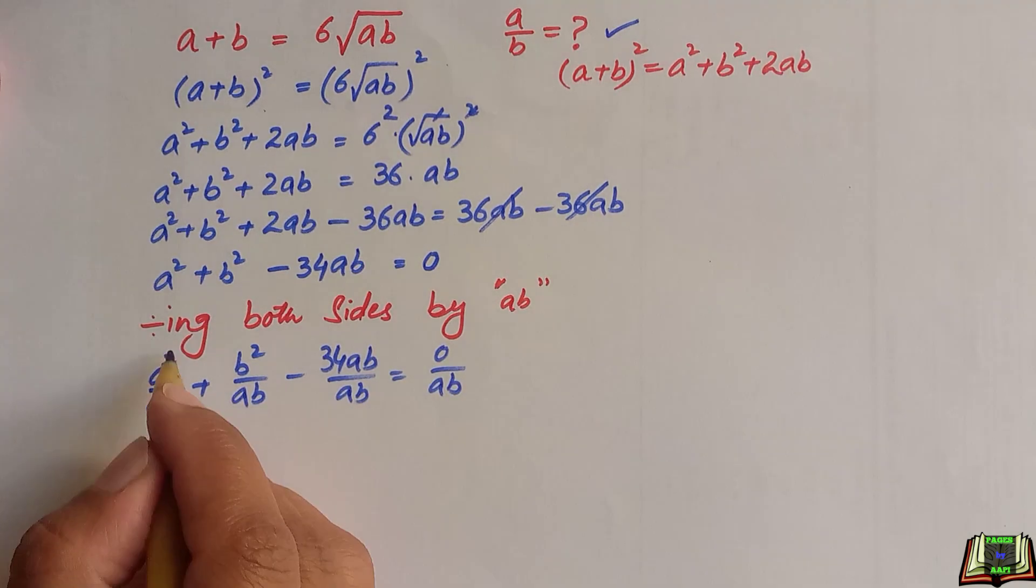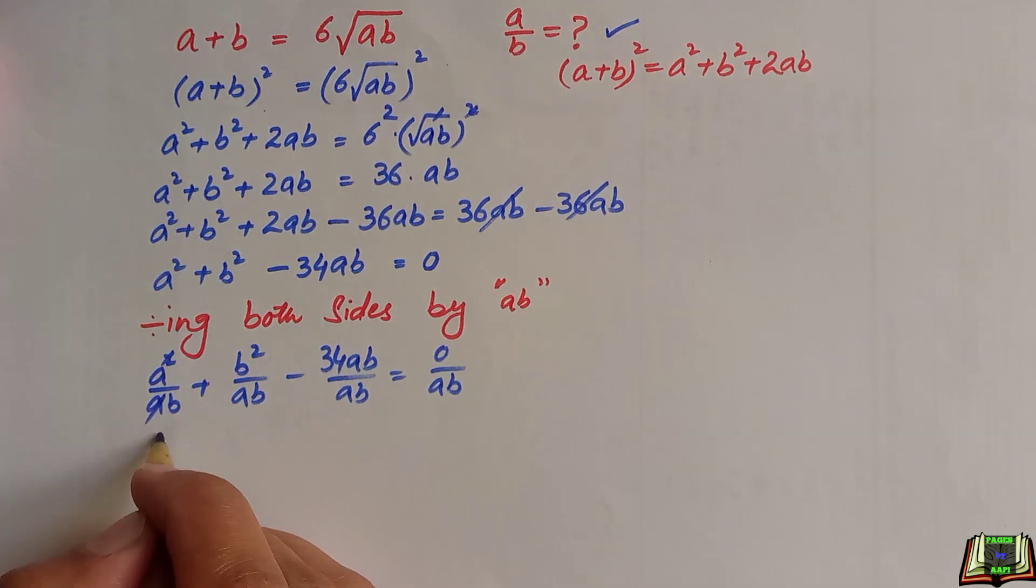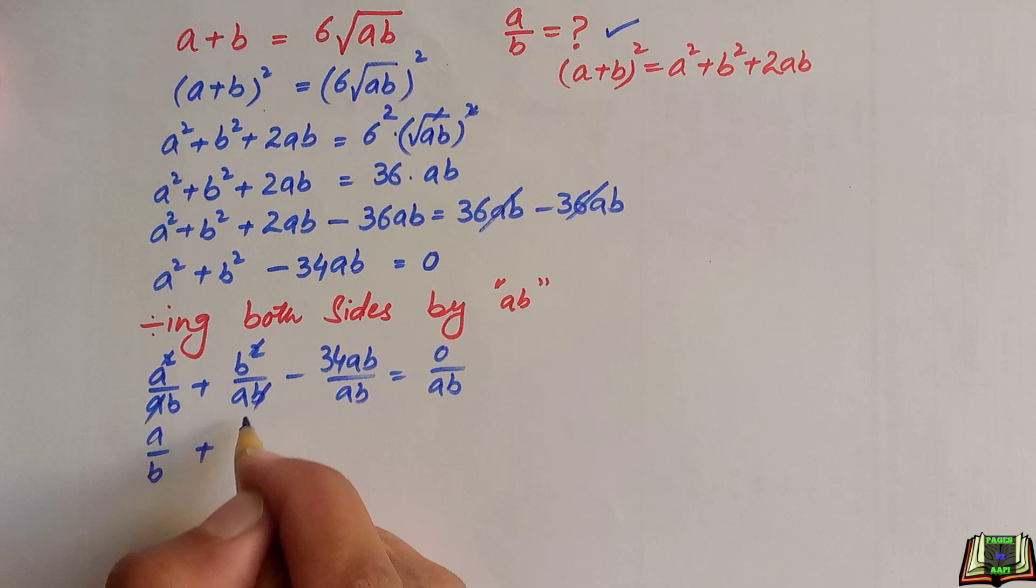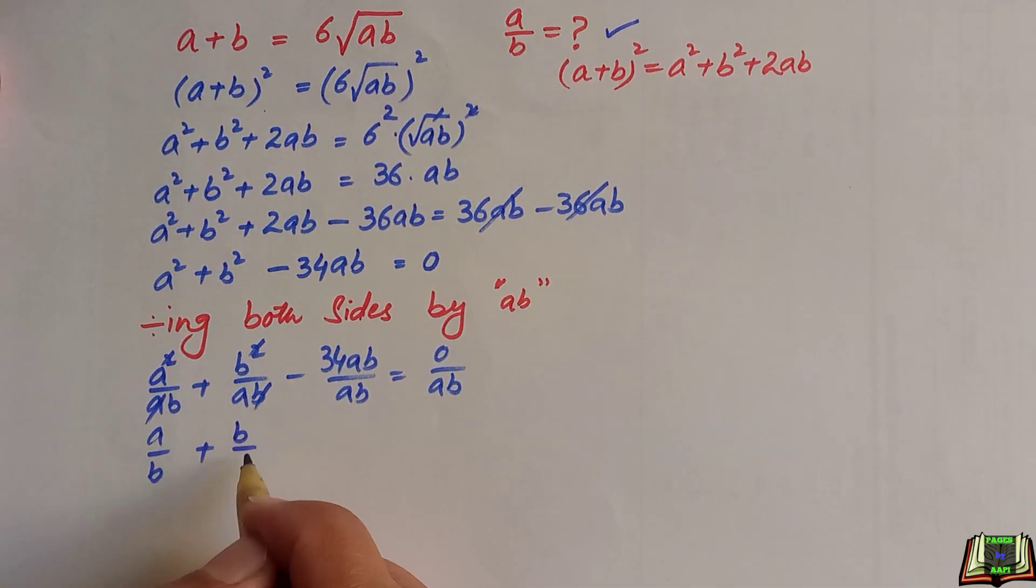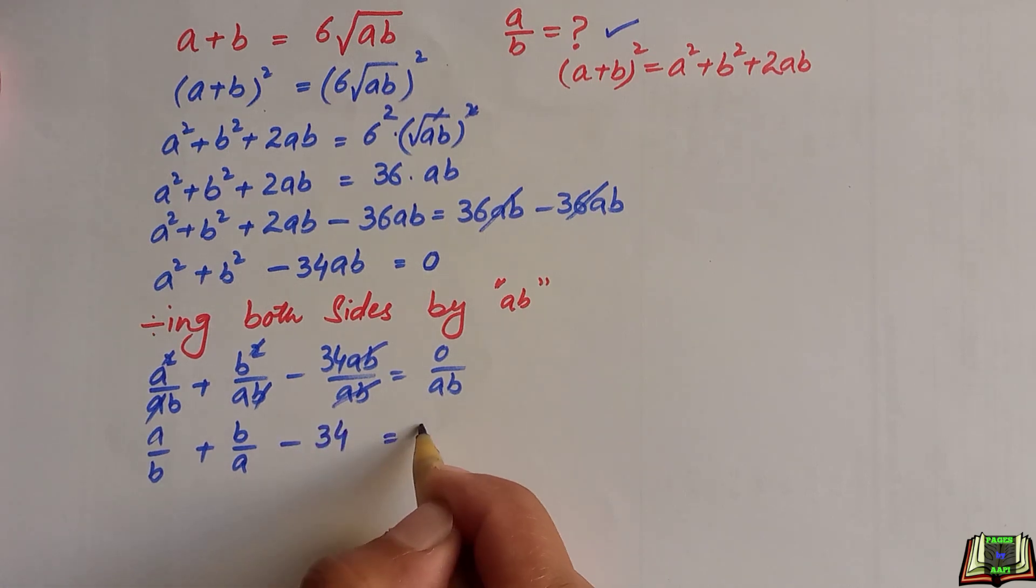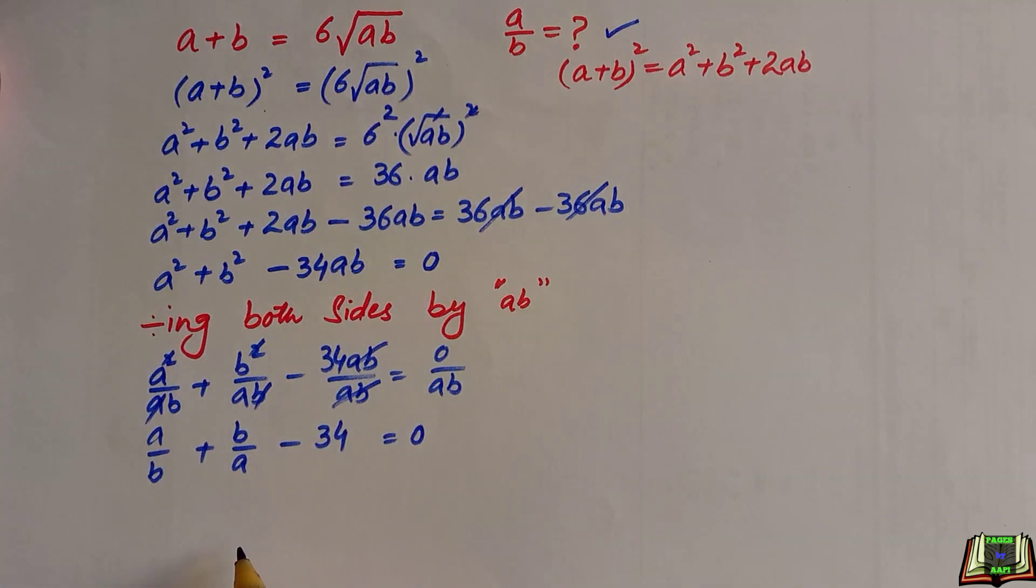Here, this a and a will be cancelled out. We are left with a over b and here b and b will be cancelled out. We have b over a. Here ab, ab cancel out. We have minus 34 only and 0 divided by any number which is again equal to 0.